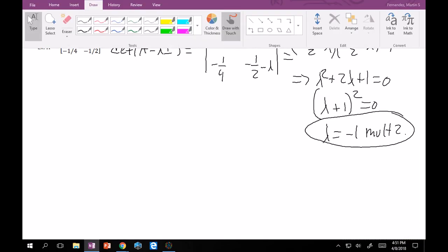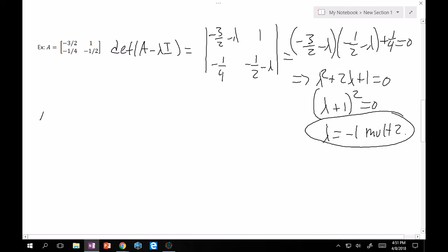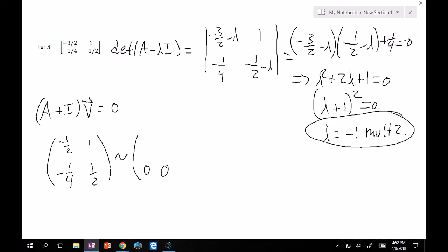So, now we want to do what we always do. A minus lambda I, which in this case will be plus I, times our only eigenvector V should give us 0, right? So, up here, we want to add I to the first and fourth component. So, that will give us minus 1 half, 1, minus 1 fourth. Then, adding a 1 here will give us a 1 half, right? Then, you can row reduce this to one of the rows being 0.